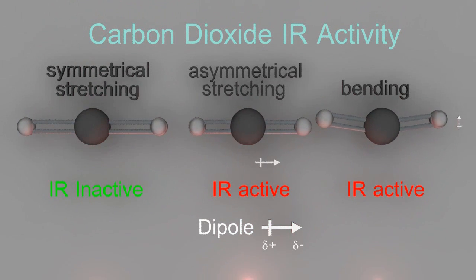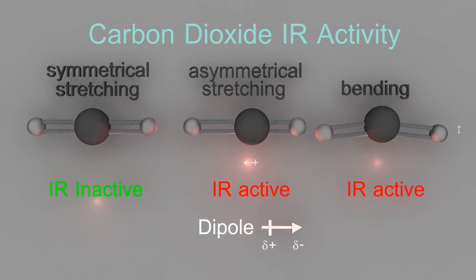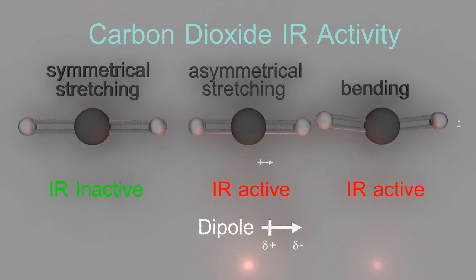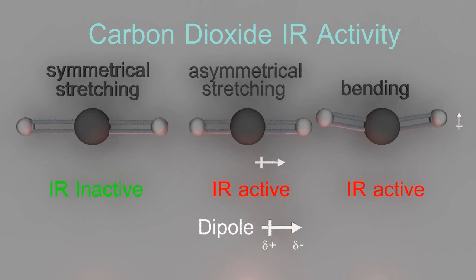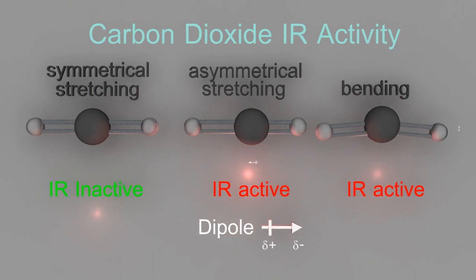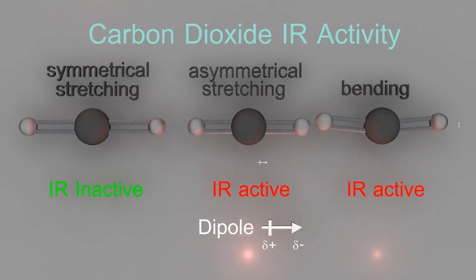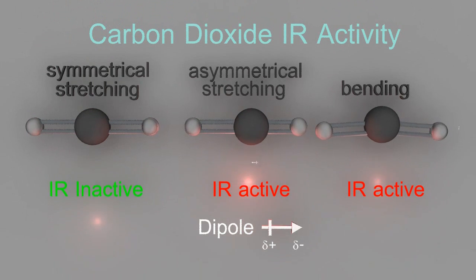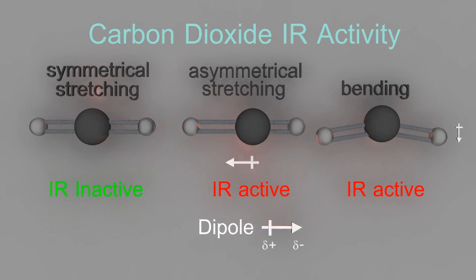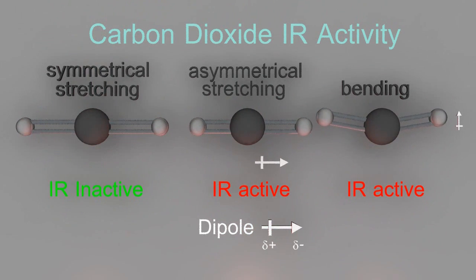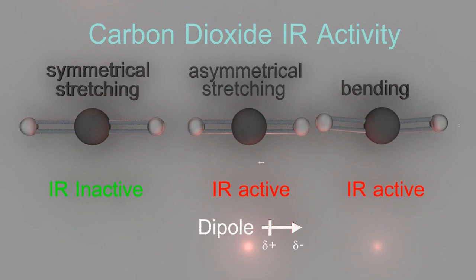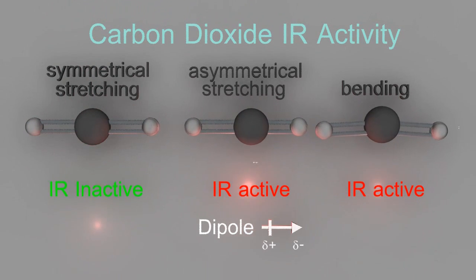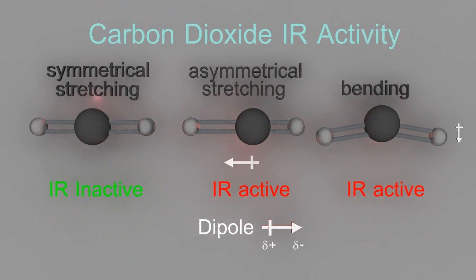Then one of two things can happen. If it's infrared inactive, like the one on the left, then the photon will just pass straight through. But if the motion is infrared active, then the infrared photon will be absorbed and then re-radiated by the carbon dioxide molecule.